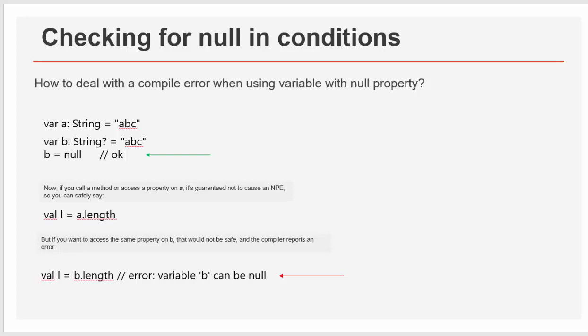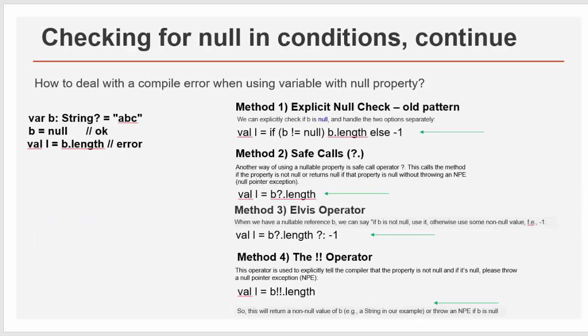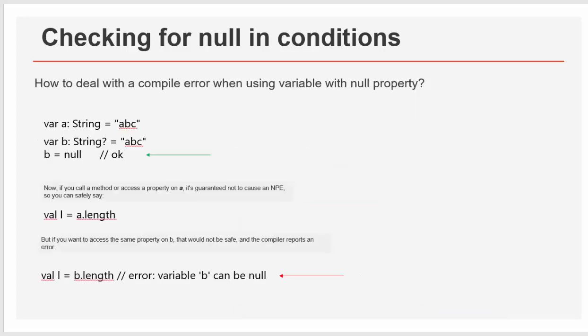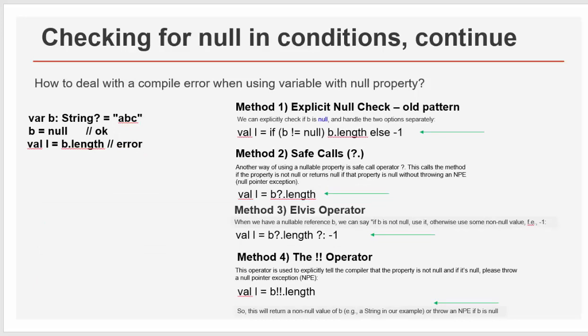Right now we're coming to the most important. How to deal with checking null, right? How to deal with the compile error when using variable with a null property. And that's what we're going to talk right now. Checking for null conditions can be done in following format. So again, the problem on the left, solution on the right side for different ways. I remind you what is the problem. b is a string, carry abc, but potentially is null, right? b null, okay. b dot length, not okay. So how to fix b dot length? That's what we're going to do.